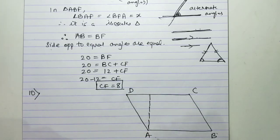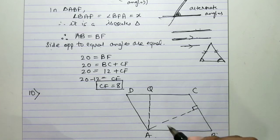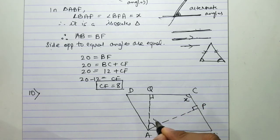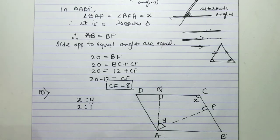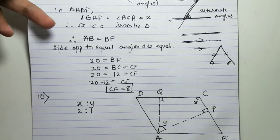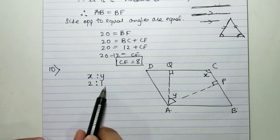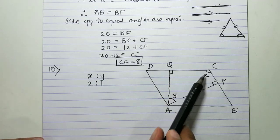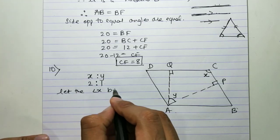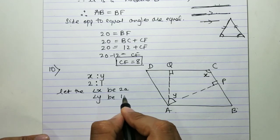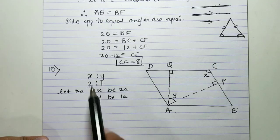In a parallelogram ABCD, AP and AQ are perpendiculars from vertex A. The angle x to angle y is in the ratio 2:1. We have to find all the angles of the parallelogram. Since x is already used in the question, let the common multiple be 'a'. So let angle x = 2a and angle y = 1a.